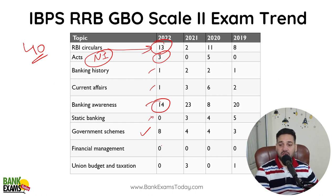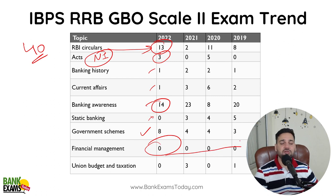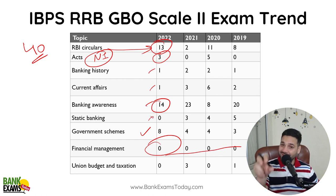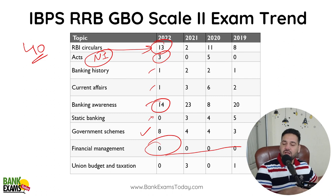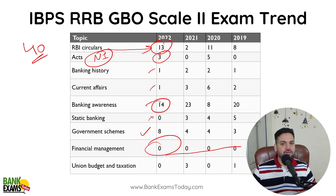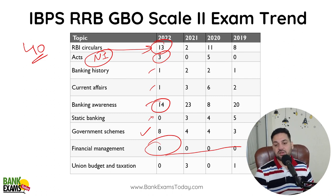FM is not being asked here — for the past 4 years there is no question from FM in RRB GBO. And that is the major difference between RRB GBO and Bank of Maharashtra Scale 2 and Scale 3. Union Budget also — no questions are coming from there.